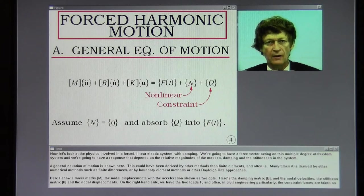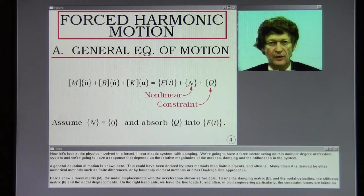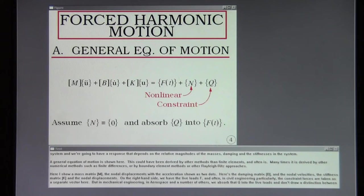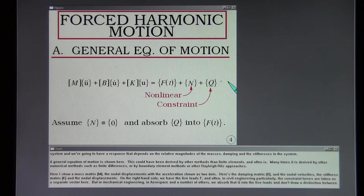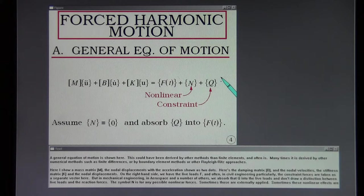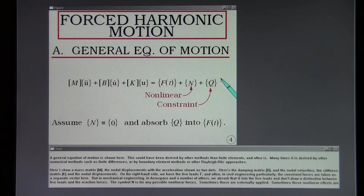Now let's look at the physics involved in a forced linear elastic system with damping. We're going to have the force vector acting on this multiple degree of freedom system and we're going to have a response that depends on the relative magnitudes of the masses, damping, and the stiffnesses in the system. A general equation of motion is shown here. This could have been derived by other methods and finite elements and often is. So many times it's derived by other numerical methods such as finite differences or by boundary element methods or other Rayleigh-Ritz approaches.